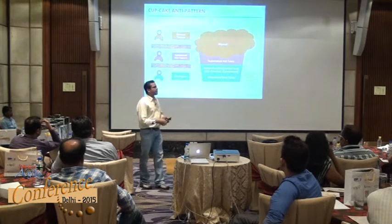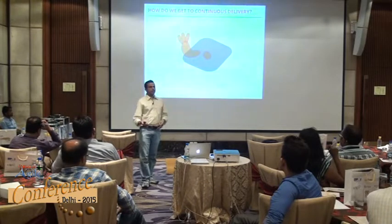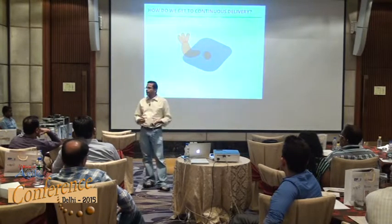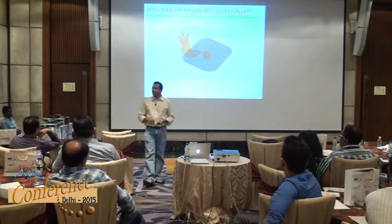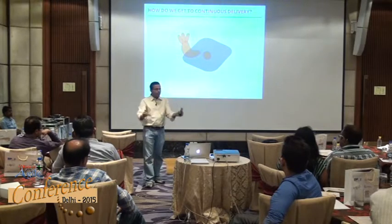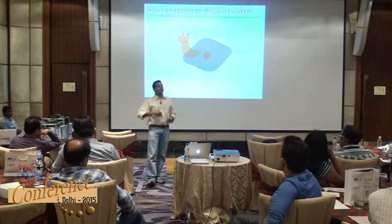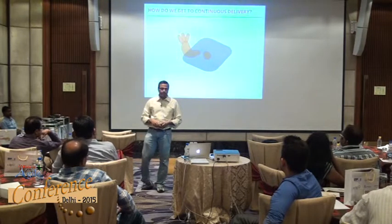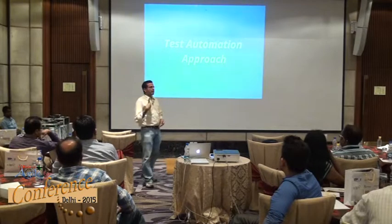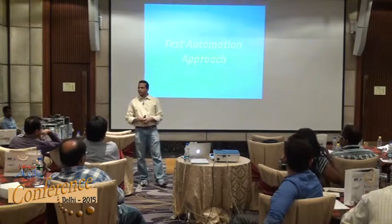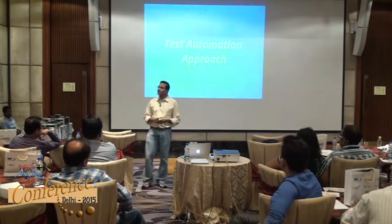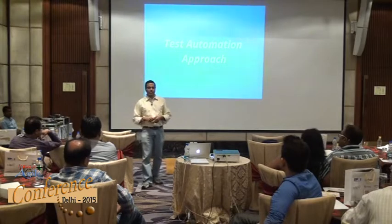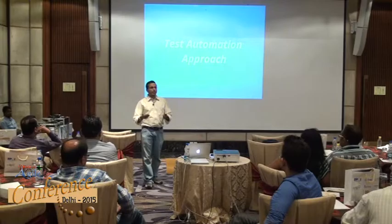How can we use information from an automation perspective to really get to continuous delivery? We need to understand how to get quick feedback. If we can focus on that from a small team perspective and get the practices in place, it is easier to spread that knowledge to different teams as well. For this particular bank — and this is a long journey; I was involved for the first year to year and a half — the approach I took focused on thinking logically about how to get quick feedback for the team.